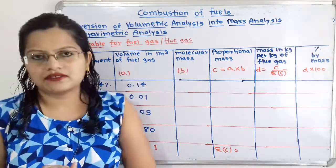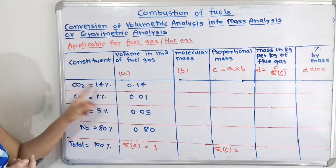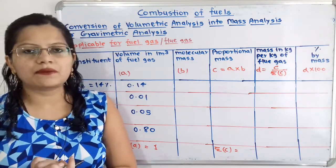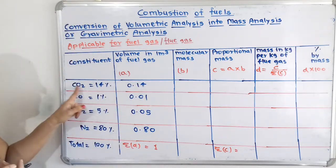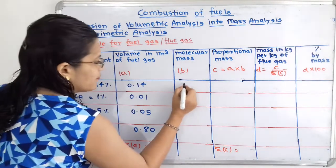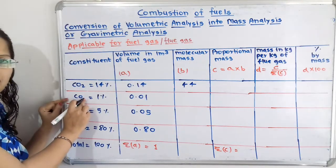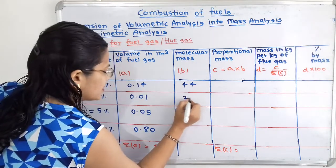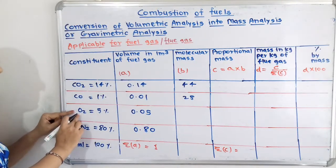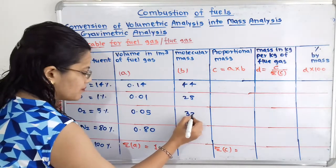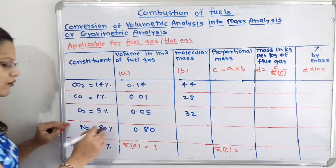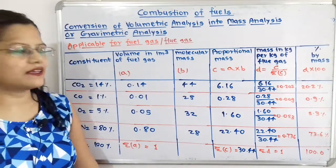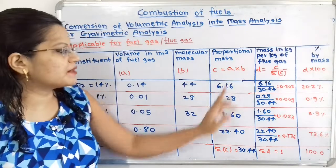Next is molecular mass. For CO₂: carbon has atomic mass 12 and O₂ is 32, so 12 + 32 = 44. For CO: 12 + 16 = 28. For O₂: 16 × 2 = 32. For N₂: nitrogen has atomic mass 14, so N₂ = 28. The next column is proportional mass, C = A multiplied by B.